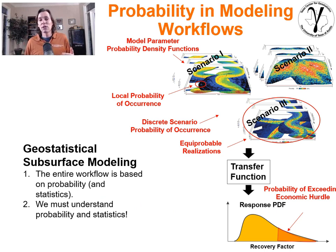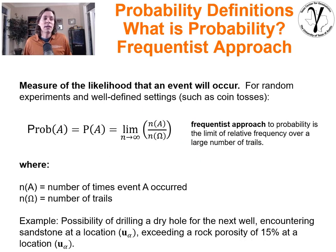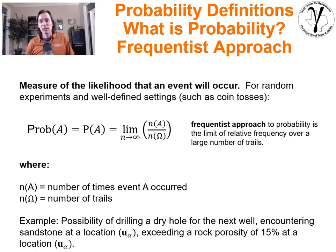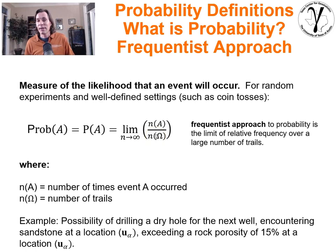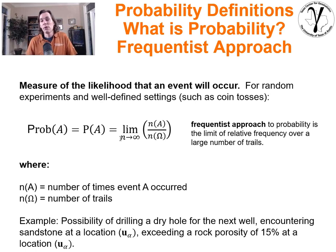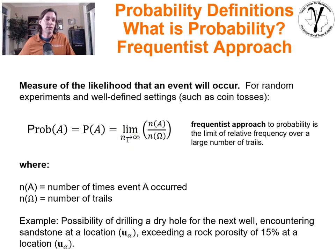We can't proceed further into subsurface modeling without making sure we're all on the same page with regard to probability. How is probability defined? It depends how you look at it — what is your frame of reference? If you take a frequentist perspective, you do counting. The probability of occurrence of event A is simply the ratio of the number of times you observe A occurring divided by the total number of observations, with the limit of observations approaching infinity. It's very dangerous to assess probability from too few samples — that's the fallacy of belief in the law of small numbers.